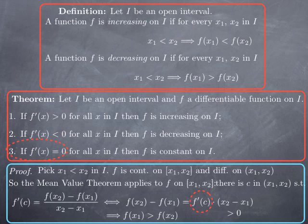Finally, in the third case, if f prime is identically zero on the interval, then f prime of c must be zero. And what we get is that f of x2 minus f of x1 equals zero — that is, f of x1 and f of x2 are equal. But this holds for any pair of values we pick in the interval I. So for any x1 and x2 we pick, we apply this reasoning and find that they have the same function value. If this is the case for any two points, that means the function is constant on the interval.